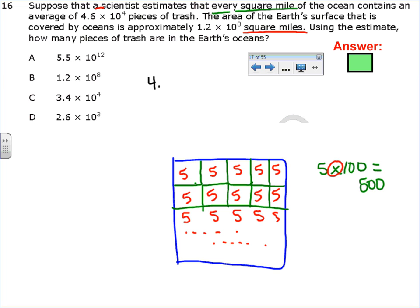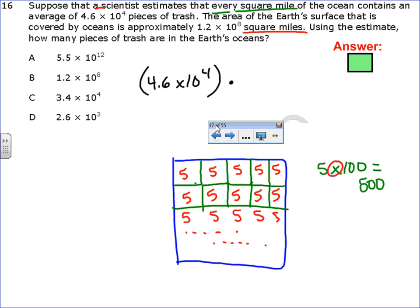So I need to say 4.6 times 10 to the 4th times 1.2 times 10 to the 8th. Well, I can do this in my calculator because it's calculator active. So I'm literally going to put all of this in parentheses times all of this in parentheses, and when you do that, you get 5.52 times 10 to the 12th.